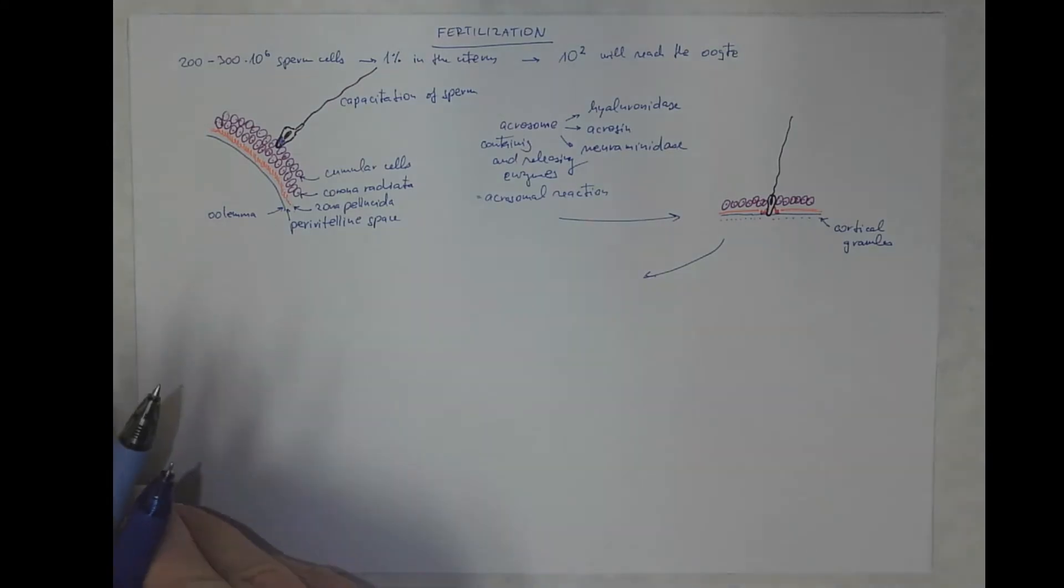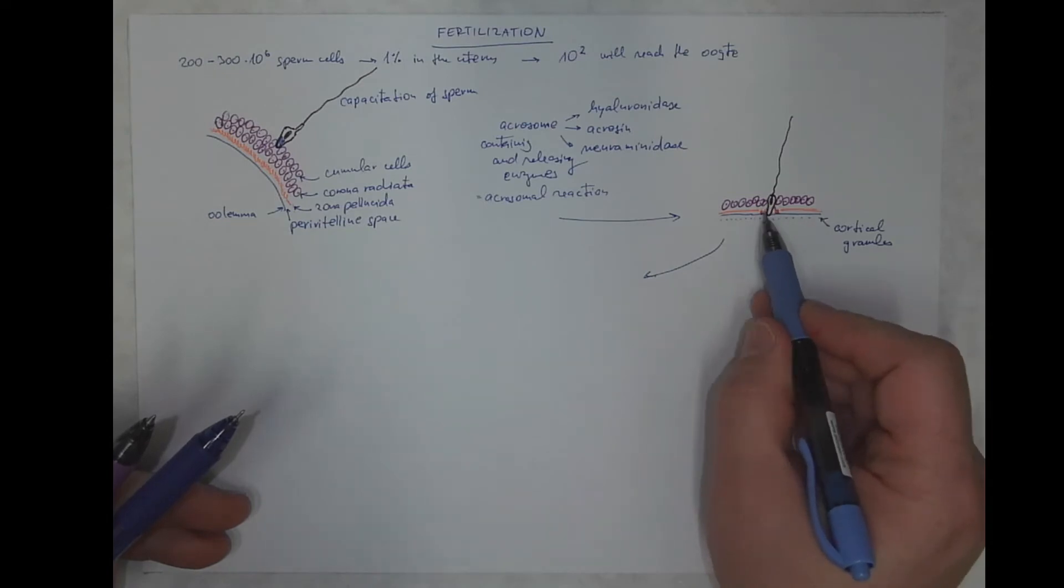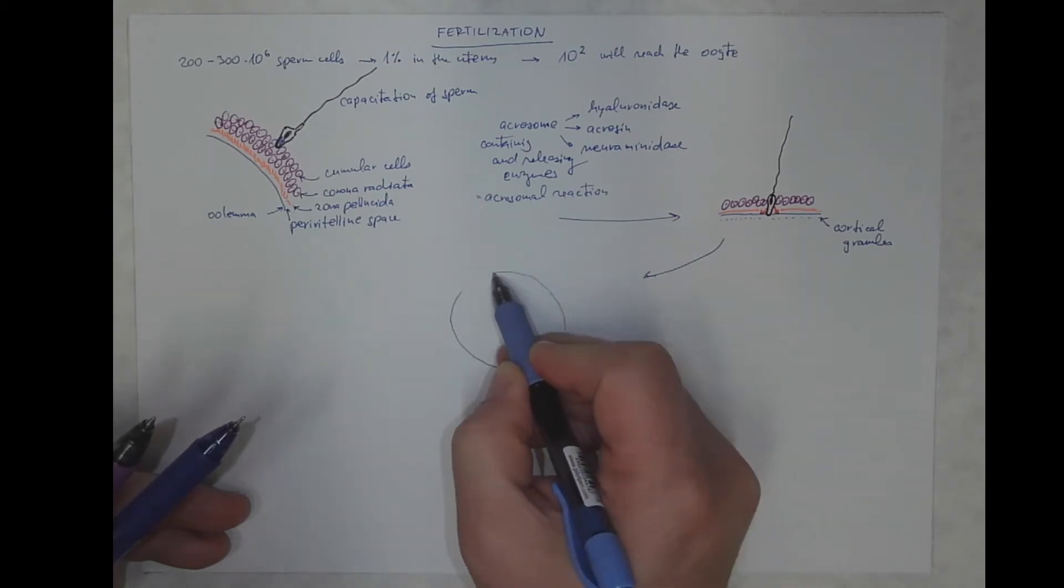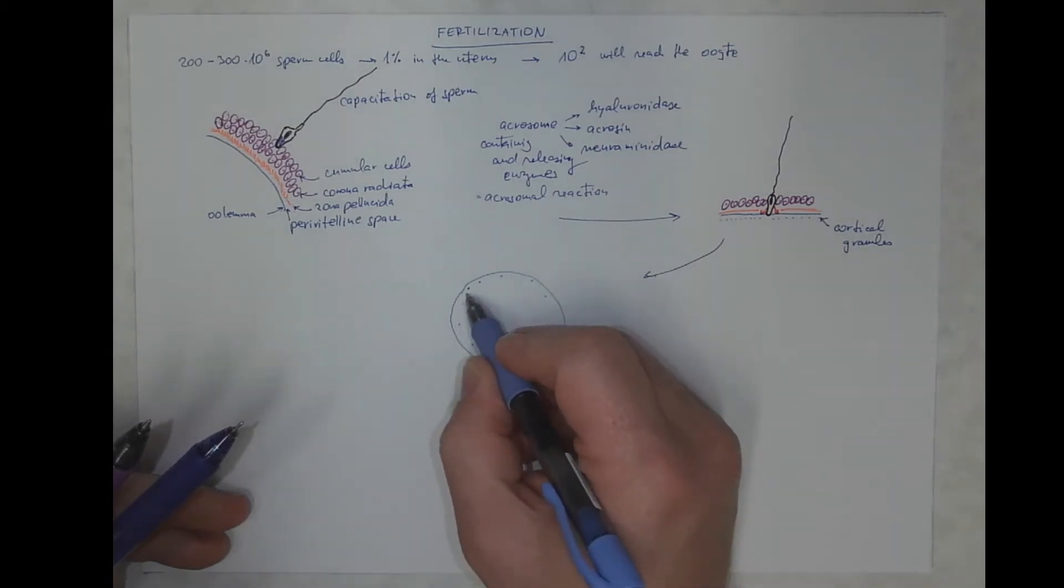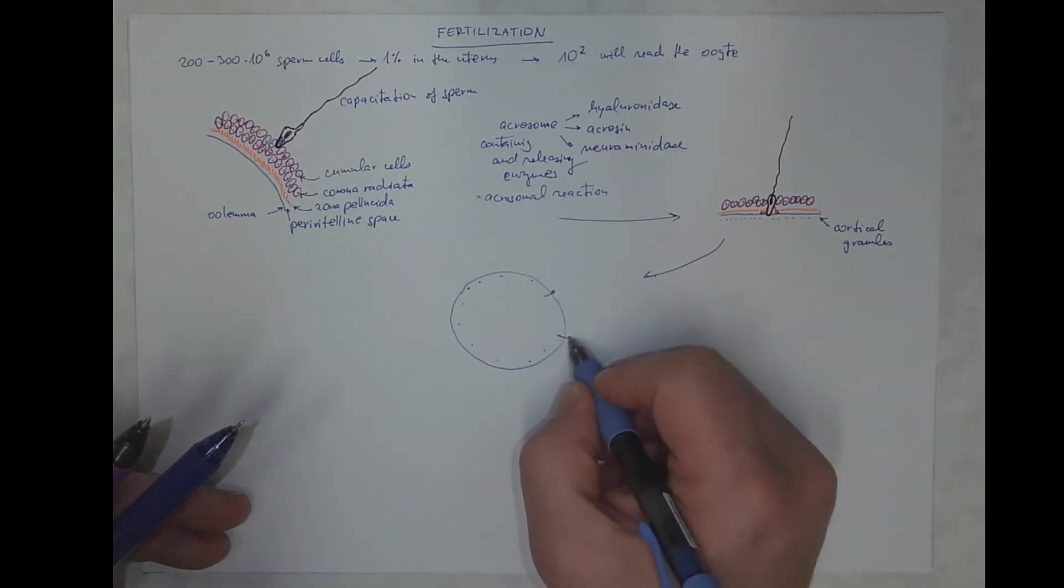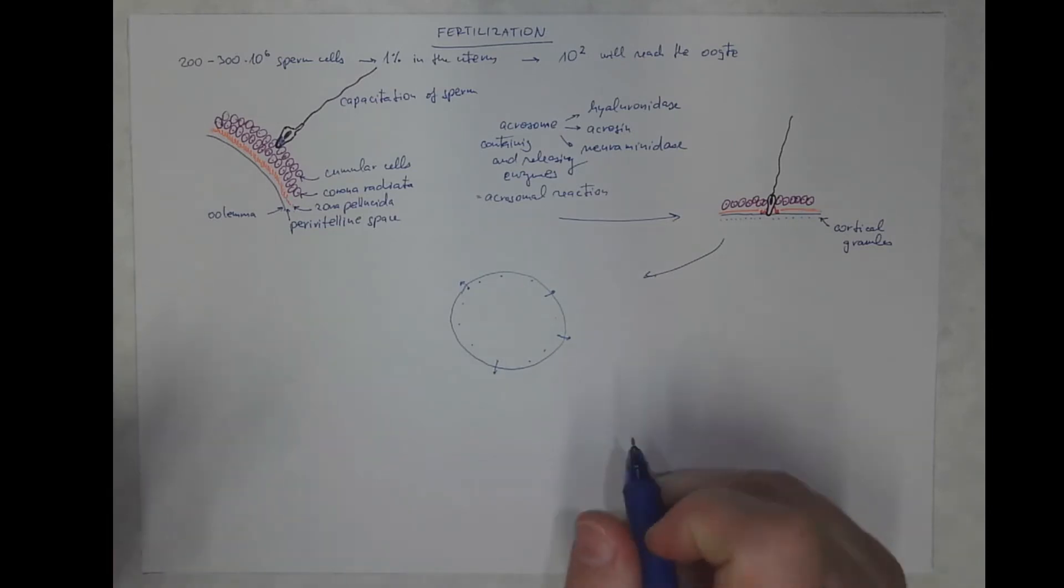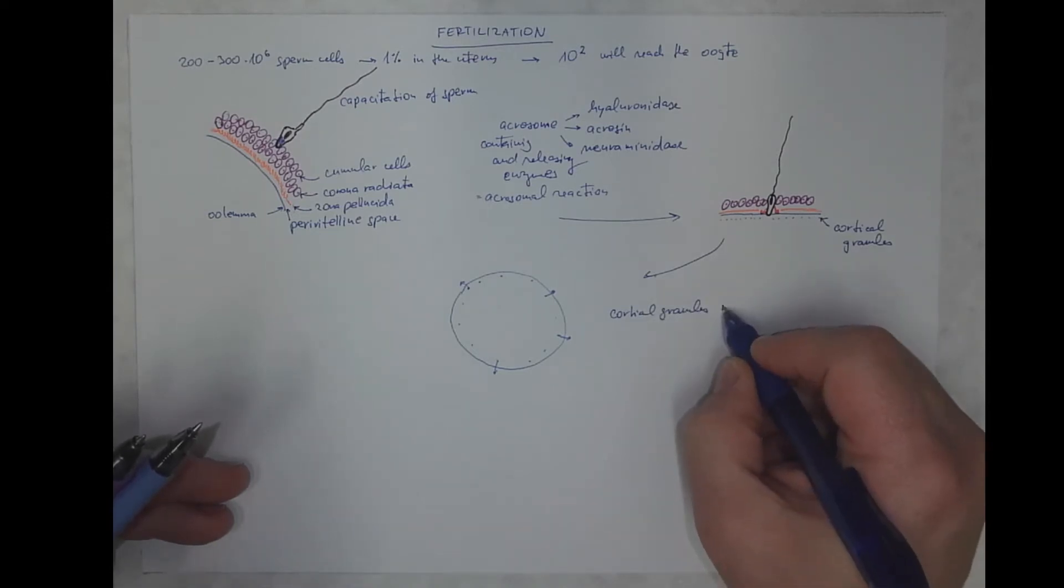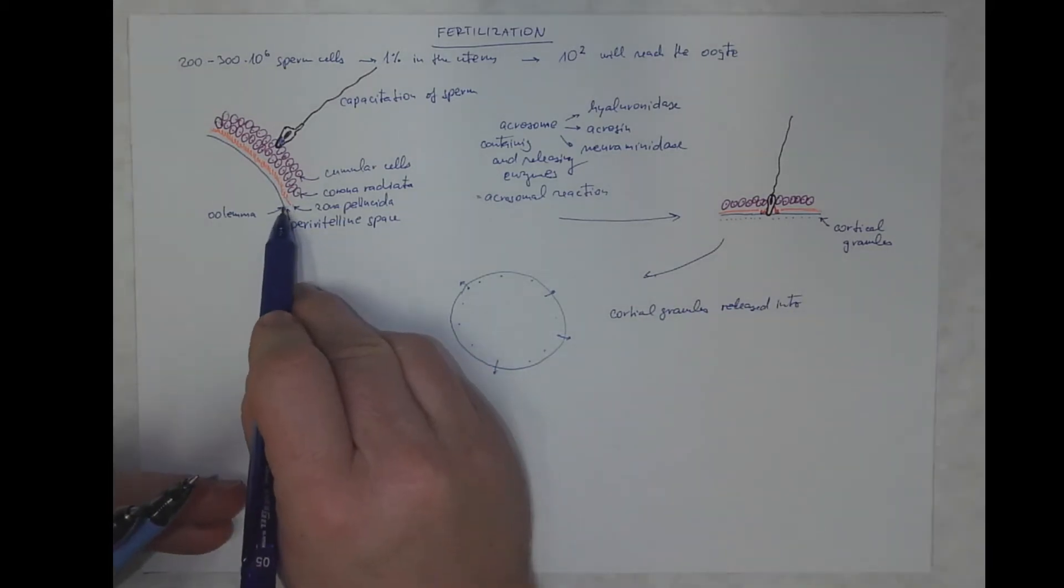And in the next stage, the release of these cortical granules, which is a reaction upon the fertilization, will trigger a so-called cortical reaction. So these granules released from the oocyte into the outer space will cause several responses. Cortical granules will be released into the perivitelline space, in that space outside the oocyte.